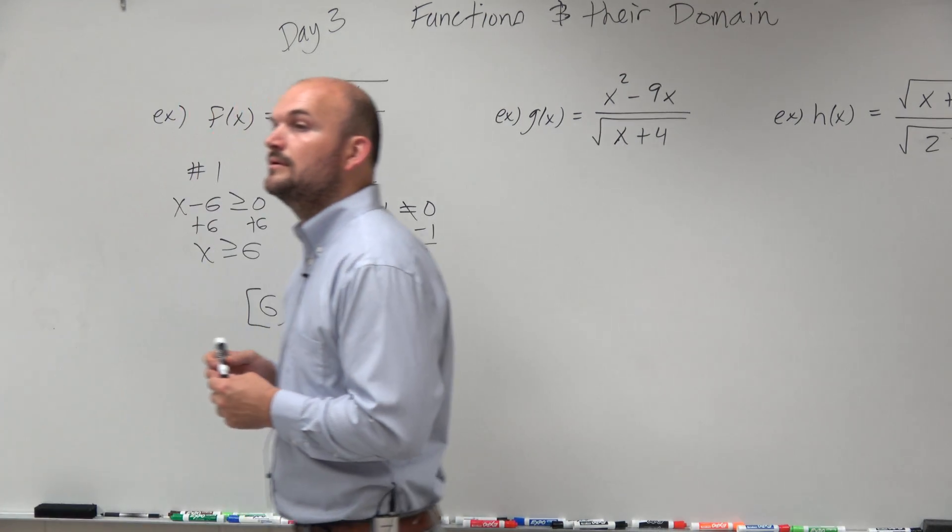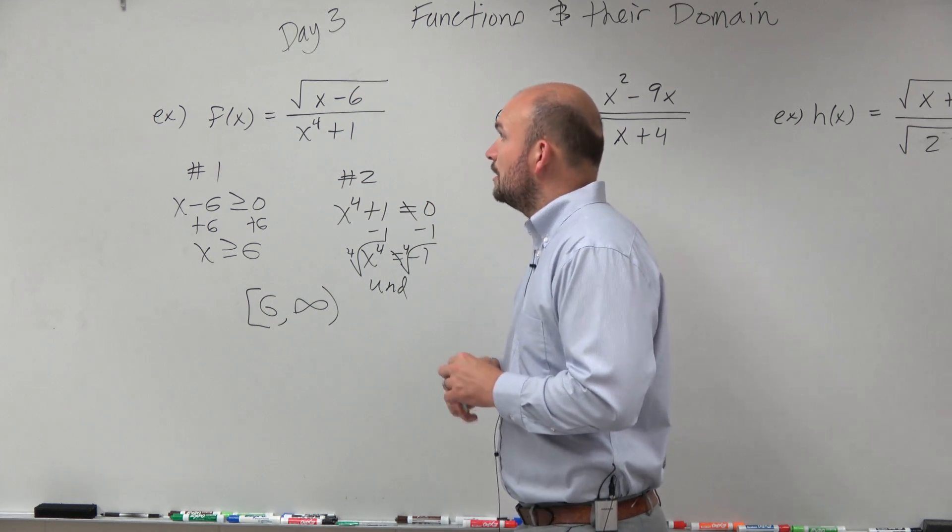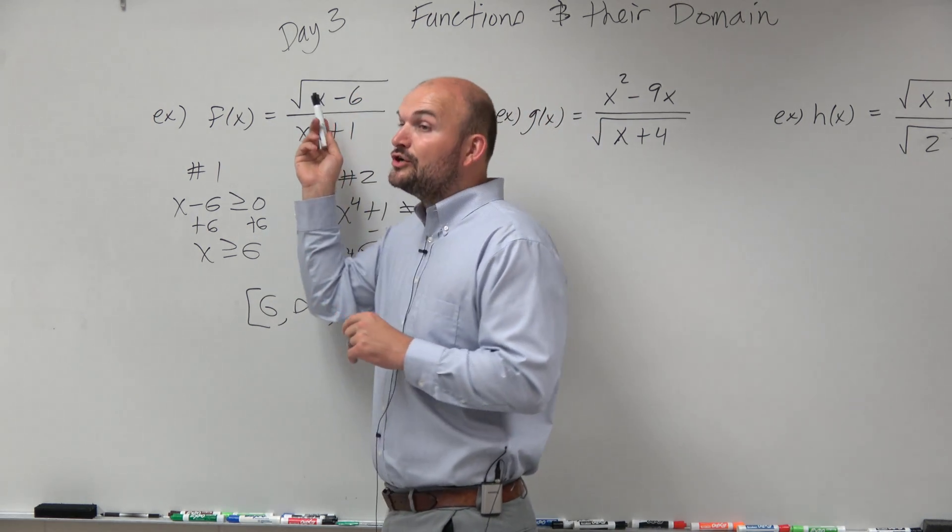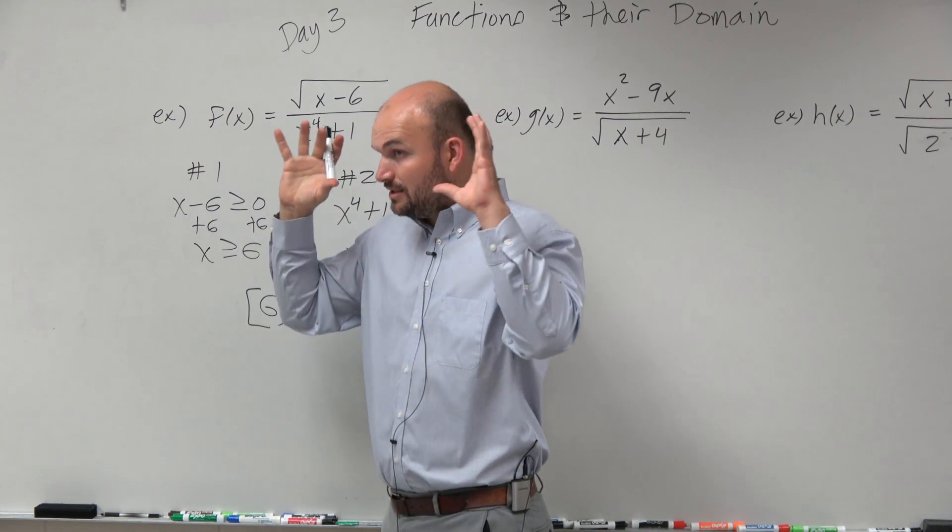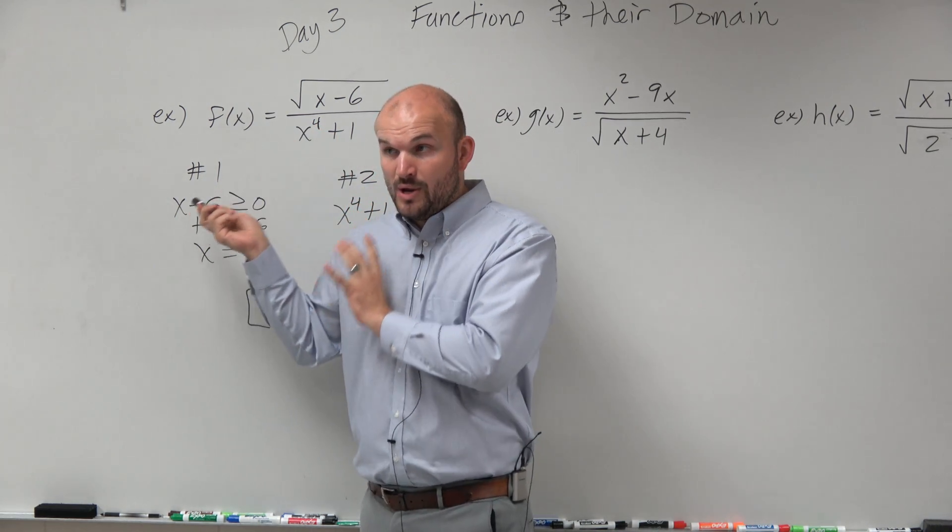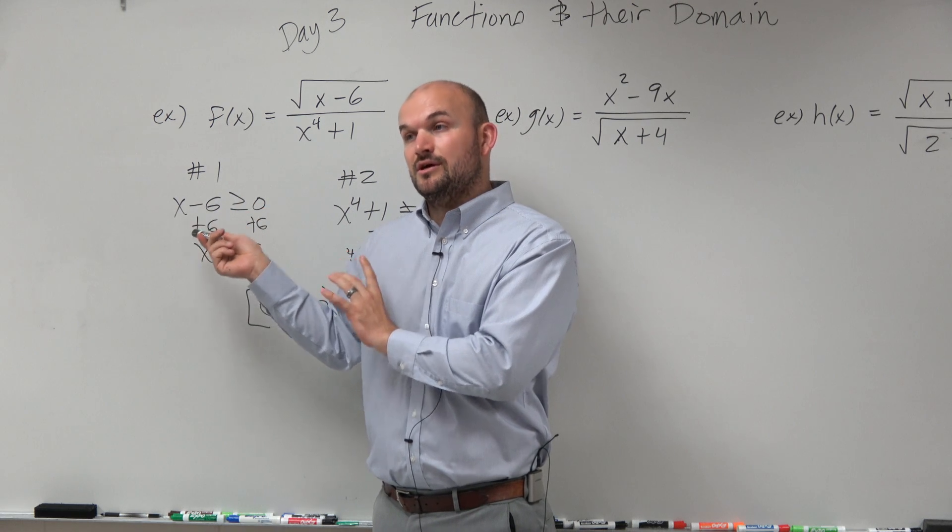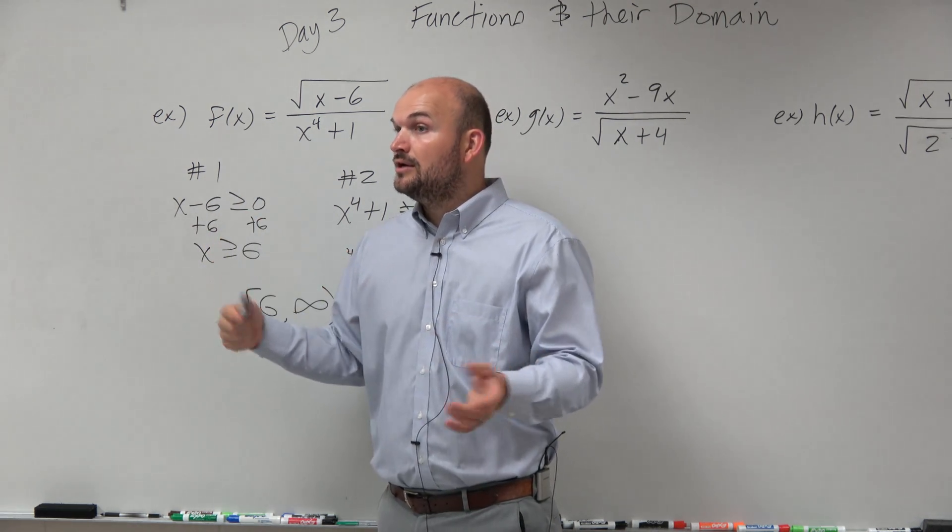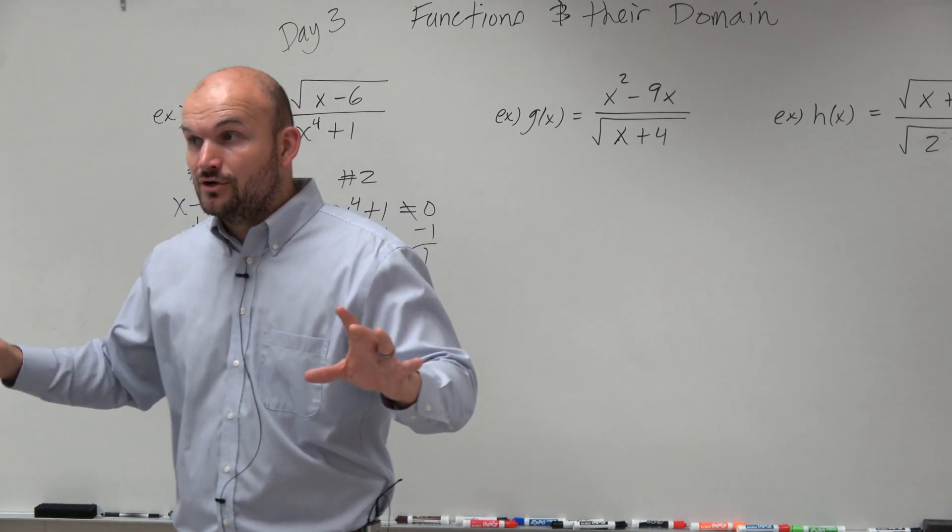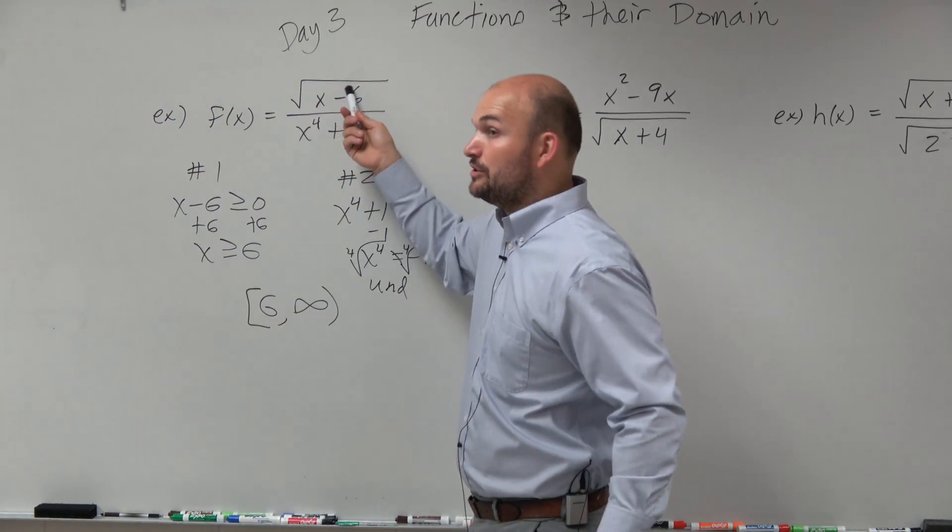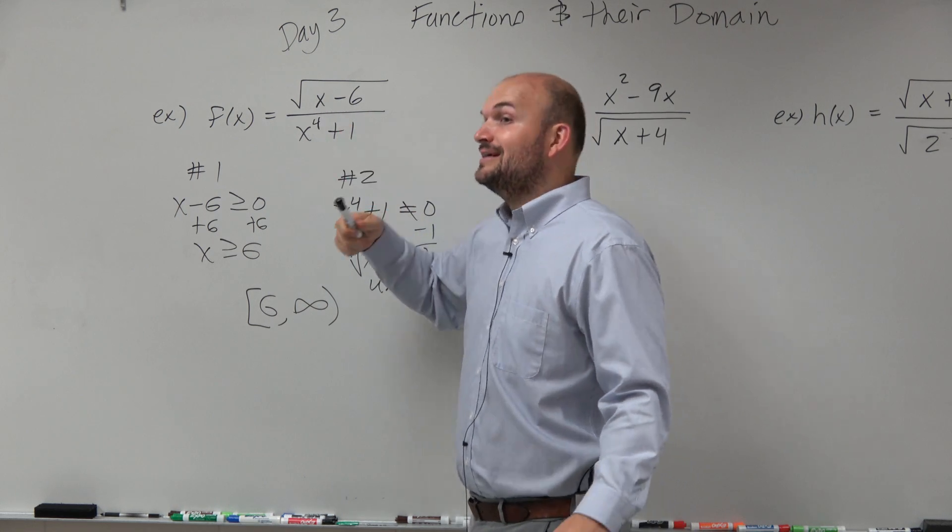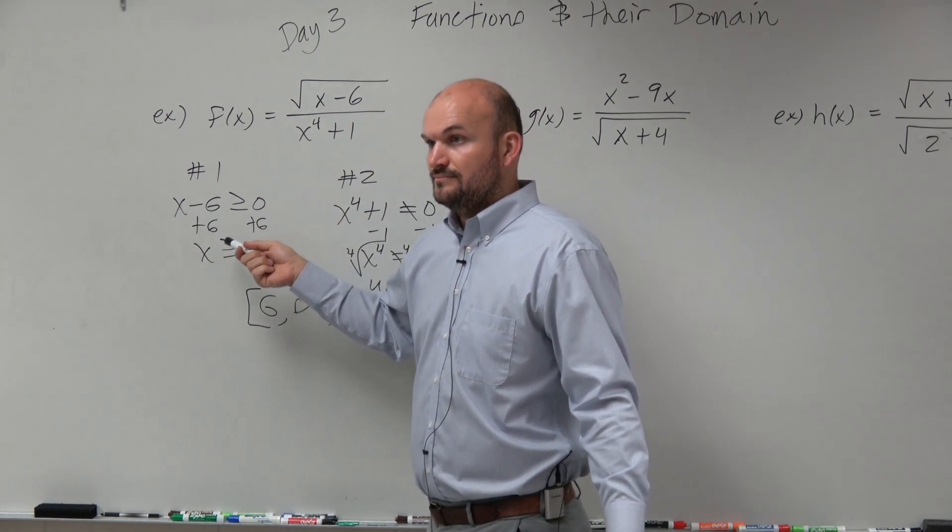Yes, question. Why did you do the numerator? I didn't do the numerator. I did what's under the radical. Whenever you see a radical, you know you have to have it greater than or equal to 0. That's restriction 1. Restriction 1 says a radical, the radicand, has to be greater than or equal to 0. So it doesn't matter if the radical is in the numerator or denominator. If you see a radical, you've got to do restriction number 1. Make sense?